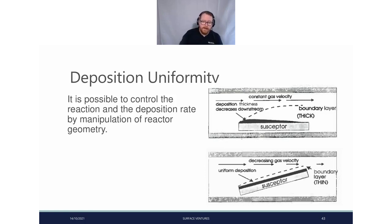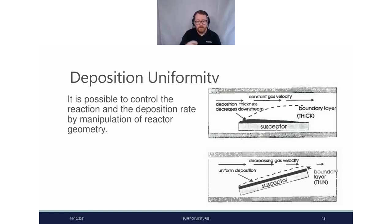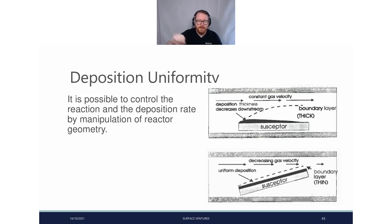In terms of deposition uniformity, geometry is important. If you have a constant gas velocity flowing across the surface, the reaction will occur where reactants first contact the substrate, creating a boundary layer — essentially growing a film only on the first section contacted. Whereas if you tilt your substrate and have a decreasing gas velocity, you can create uniform deposition across a very thin boundary layer, allowing growth to occur uniformly across all of your substrate.